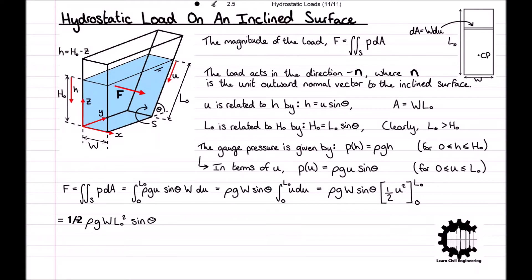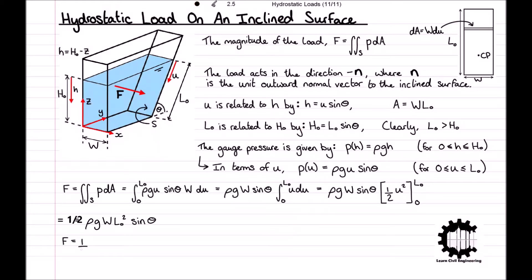Recall that the area of the surface a equals w l0, and that h0 equals l0 sine theta. Therefore, substituting in the expression for a first, f is equal to 1 half rho g l0 sine theta a, and then in terms of h0 rather than l0, we get f is equal to 1 half rho g h0 a.